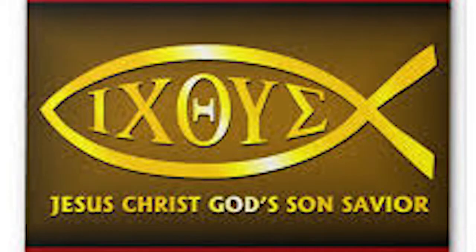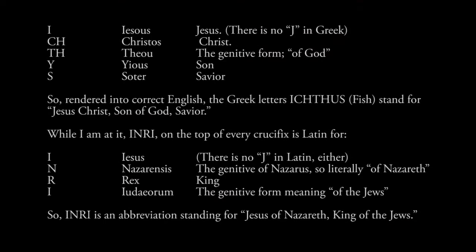Ikthus is the Greek word for fish, and ikthus was an abbreviation for something. Ikthus stands for Jesus Christ, Son of God, Savior. Let me show you how it lines up with the Greek: I — Iesus (Jesus); C-H — Christos (Christ); T — Theou (of God, in the genitive case); U — Uios (Son); S — Soter (Savior). So I-C-H-T-H-U-S, ikthus, stands for Jesus Christ, the Son of God, Savior. Clement is saying: use a fish, everybody will get it. All your fellow Christians will know this is a reference to Jesus Christ and that you are a Christian.